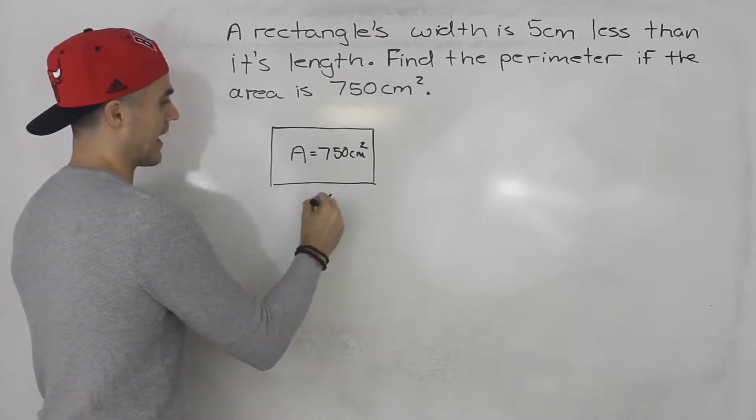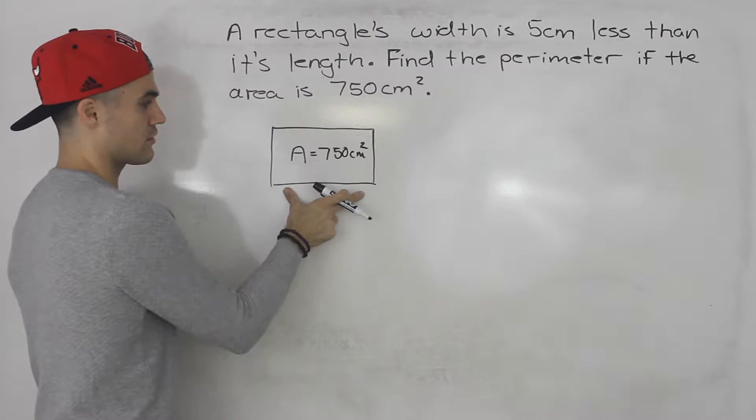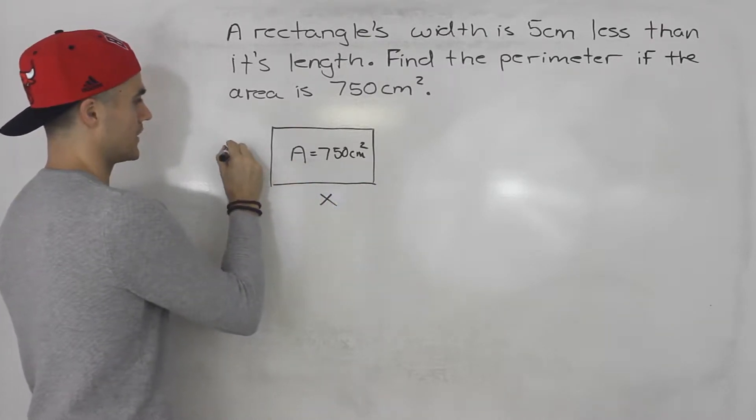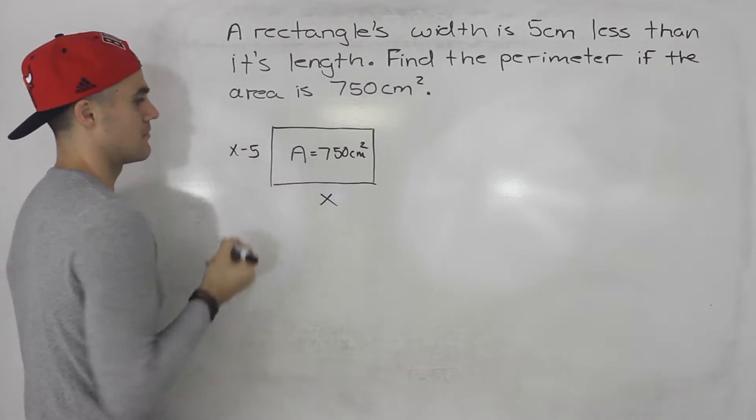So if we let x equal the length of the rectangle, then its width we know is going to be x minus five, five less than its length.